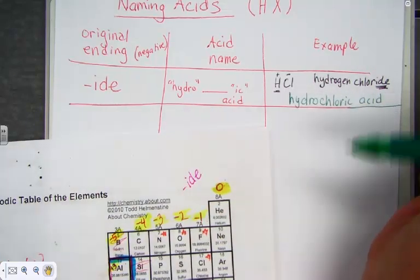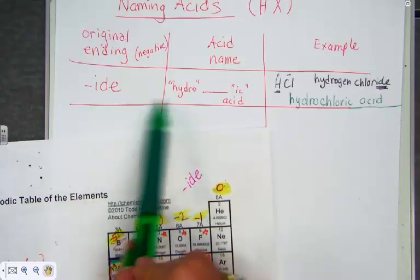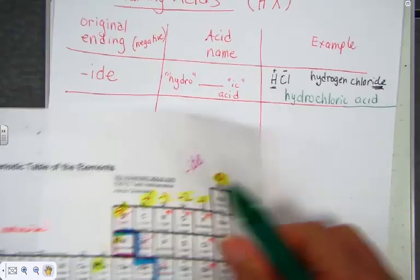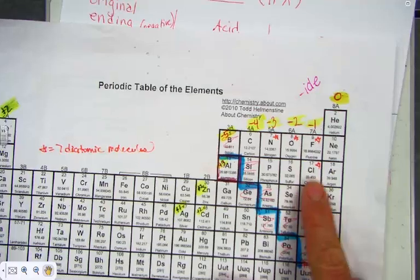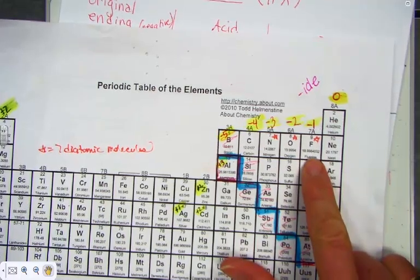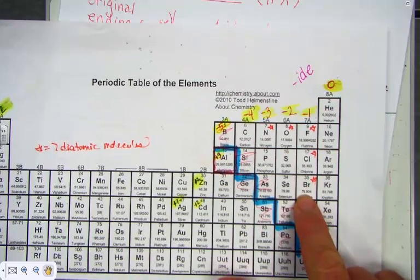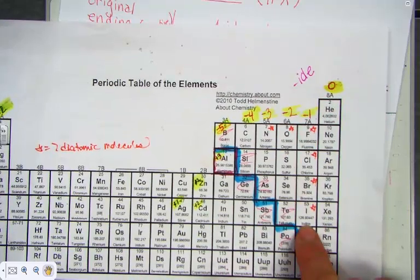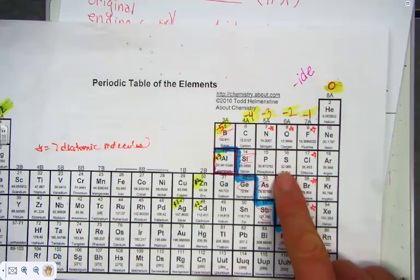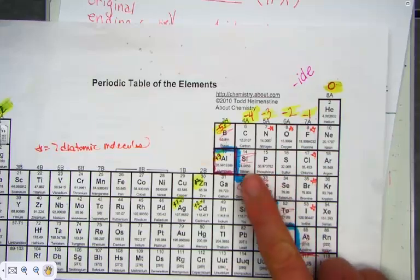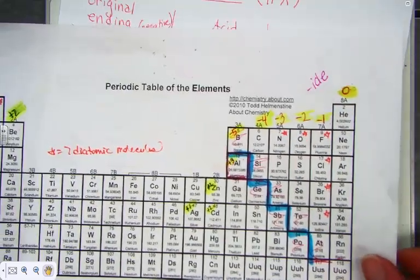If the original ending were -ide, hydro, root word, -ic. Hydrochloric, HCl. Hydrofluoric, HF. Hydrobromic, HBr. Hydroiotic, HI. Hydrosulfuric, H2S, balancing charge, and so forth. Hydro, root word, -ic.